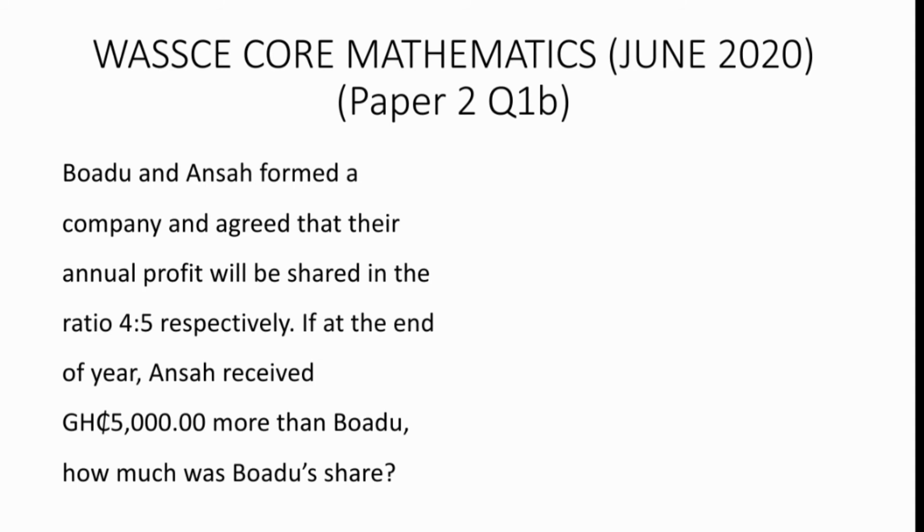The question also stated that Ansa received 5000 Ghana cedis more than Bodo, which means the difference between their shares equals 5000 Ghana cedis. So you have 5 over 9 multiplying x minus 4 over 9 multiplying x equals 5000 Ghana cedis.